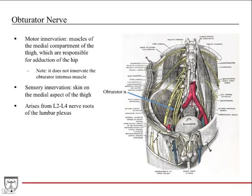First, the obturator nerve. We've broken it down into its motor innervation and sensory innervation. Motor innervation: it does muscles of the medial compartment of the thigh, which are responsible for adduction of the hip. Note it does not innervate the obturator internus muscle — definitely make note of that so you don't get tripped up on an exam.